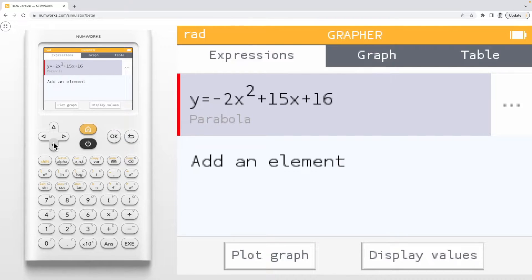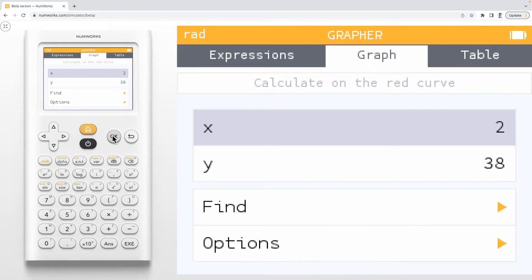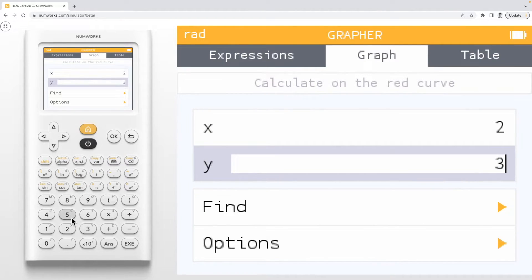Let's go down to plot the graph. Pressing OK will open our calculate menu. Here we can input our given y value of 35 and press execute.